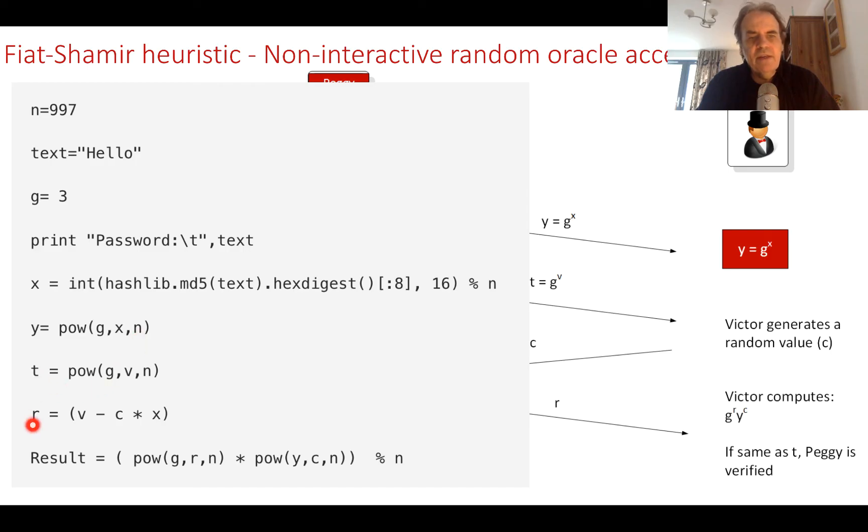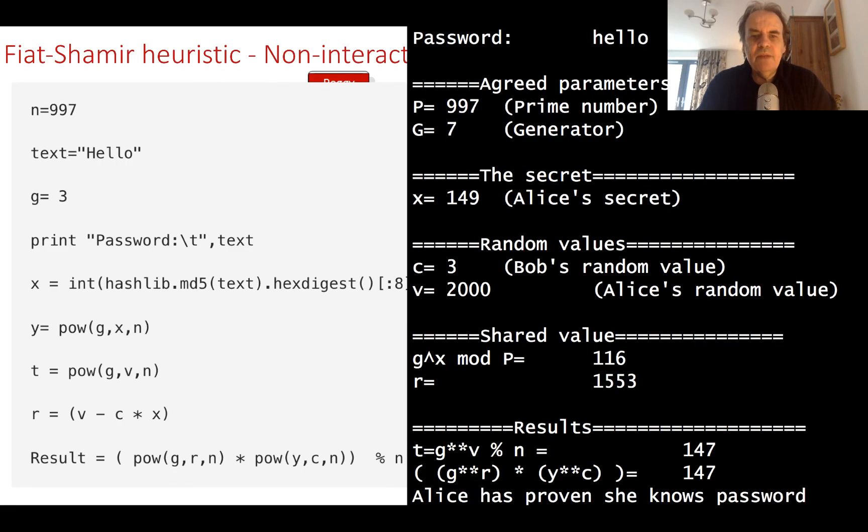This is g to the power of x mod n. We calculate t and r, then we get the right value. We get the values back, multiply them as we have here, and check that they're equal to t. Here's an example - there's the prime number, the g value, the secret based on the password, then the challenges and responses, and we end up with the same value.